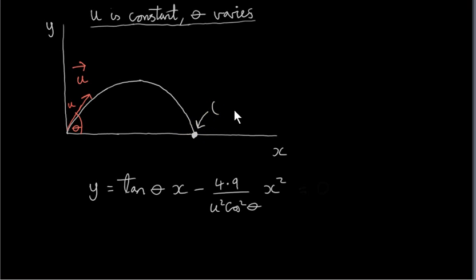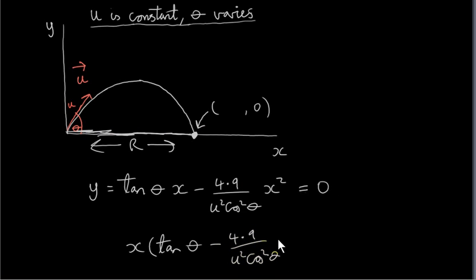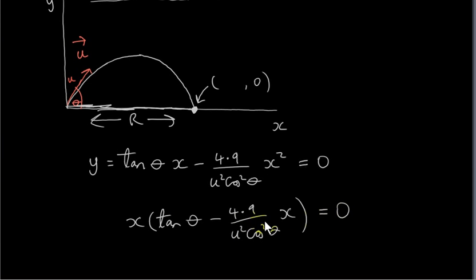We want to find the x value of this point here. We know that the y value is zero. So we put this equal to zero and we solve for x. So we can factorize x out of this. So this will enable us to find the range, and then we can decide what value theta has to be to maximize this range. This distance here is the range, the x value of this point. So we solve this for x.